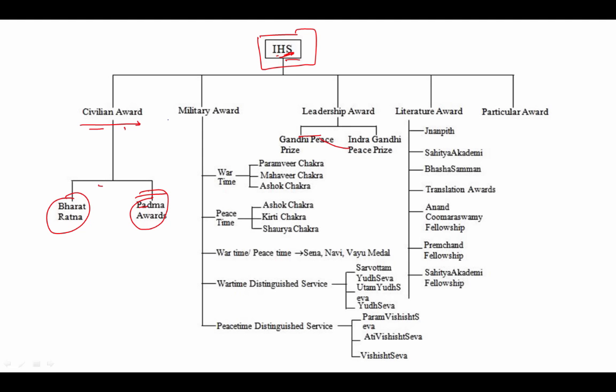There are also military awards. For wartime, there are three awards: Param Vir Chakra, Maha Vir Chakra, and Vir Chakra. These are wartime prizes given to soldiers who fought in wars such as 1962 or 1965. Param Vir Chakra is the biggest wartime award. For peacetime military service, there are three awards: Ashok Chakra, Kirti Chakra, and Shaurya Chakra. Then there are both wartime and peacetime medals: Sena Medal, Nao Sena Medal, and Vayu Sena Medal.